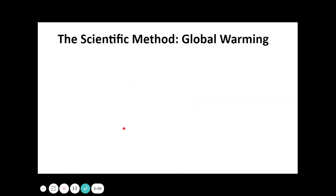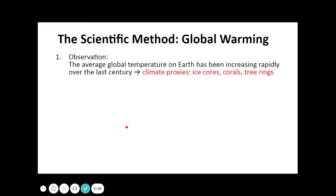Let's look at global warming in a scientific way. The observation is that the average global temperature of Earth has been increasing rapidly over the last century. This is different from the natural global warming that has been part of Earth's processes. There are several measurements using climate proxies such as ice cores, corals, and tree rings.